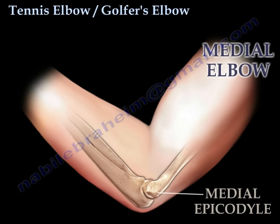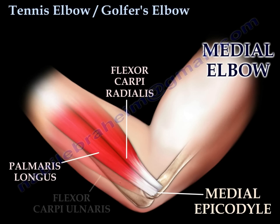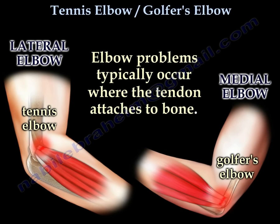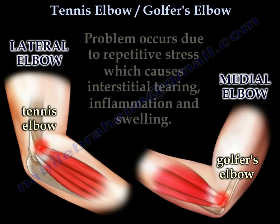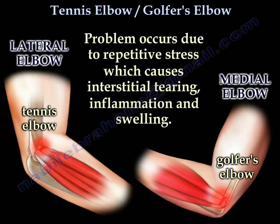On the medial side of the elbow, you have the medial epicondyle giving origin to the flexor muscle group. Elbow problems occur with the tendon attached to the bone at the outer side of the elbow, or the lateral elbow — we call it tennis elbow. At the medial side, or inside of the elbow, we call it golfer's elbow. The problem occurs due to repetitive stress, which causes interstitial tearing, inflammation, and swelling of the tendon.